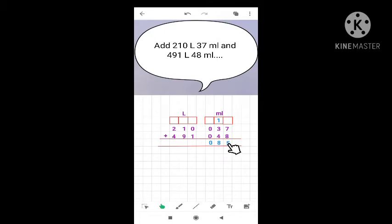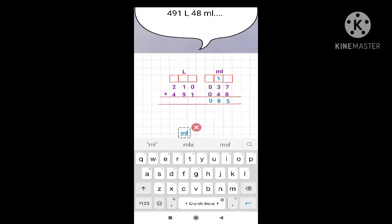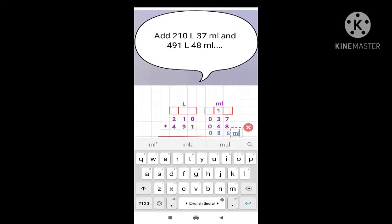Because the value of milliliter should be in three digits. Always remember to add the values of milliliter in milliliter and the value of liter in liter. So here we get 85 milliliter. Don't forget to write its unit.